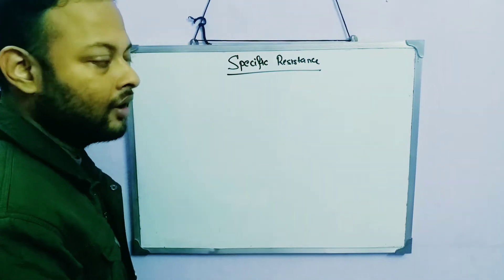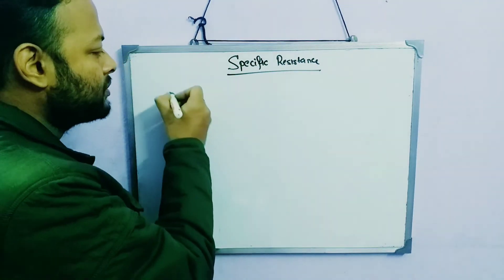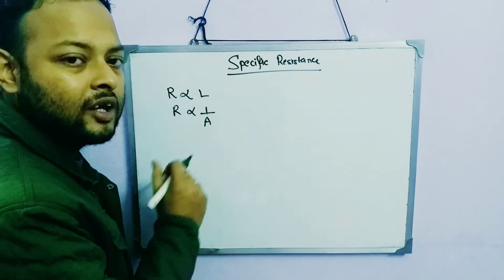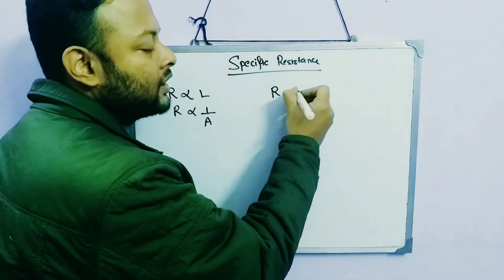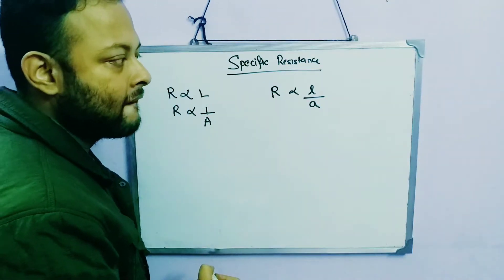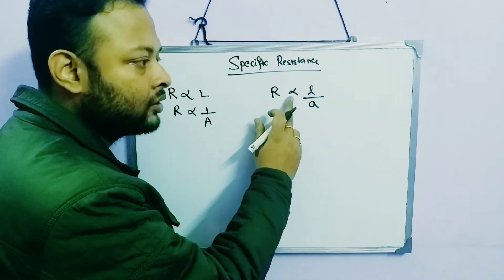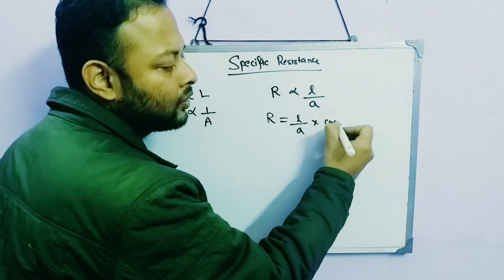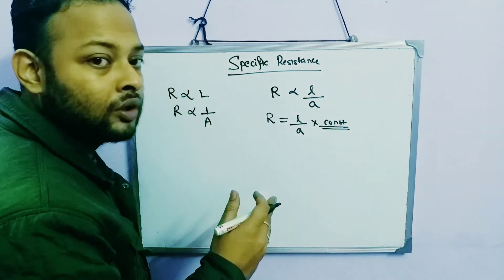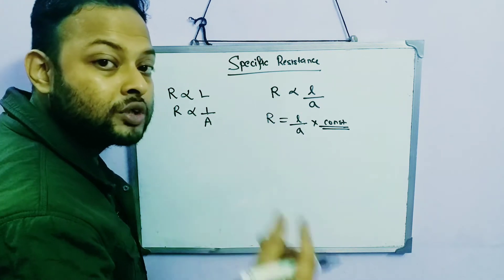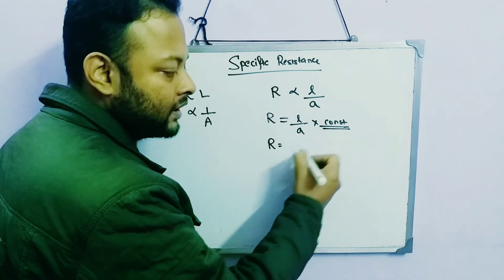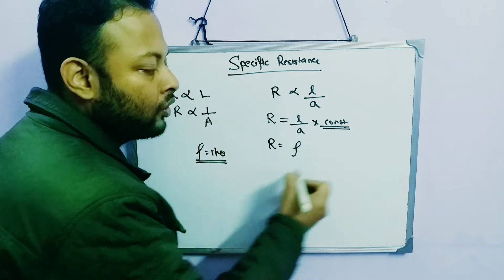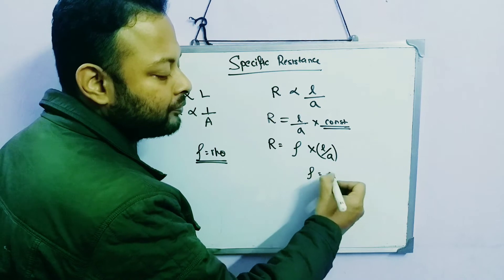First let's understand what we studied in the previous video. Resistance is proportional to length, and resistance is proportional to one by area of cross-section, where A represents area of cross-section. Combining both, resistance is proportional to length by area of cross-section. To remove the proportionality sign, we introduce a constant — the same way we did in Ohm's law. This constant is represented by the letter rho, so resistance equals rho times l by A.